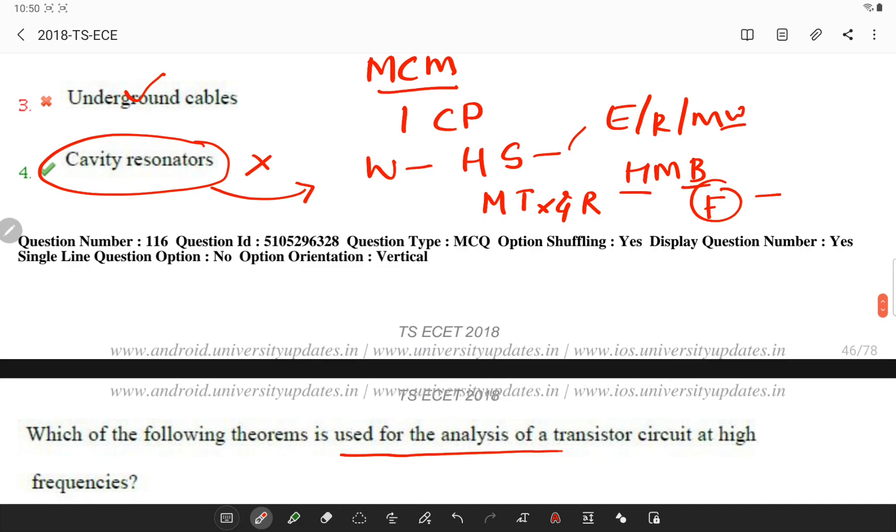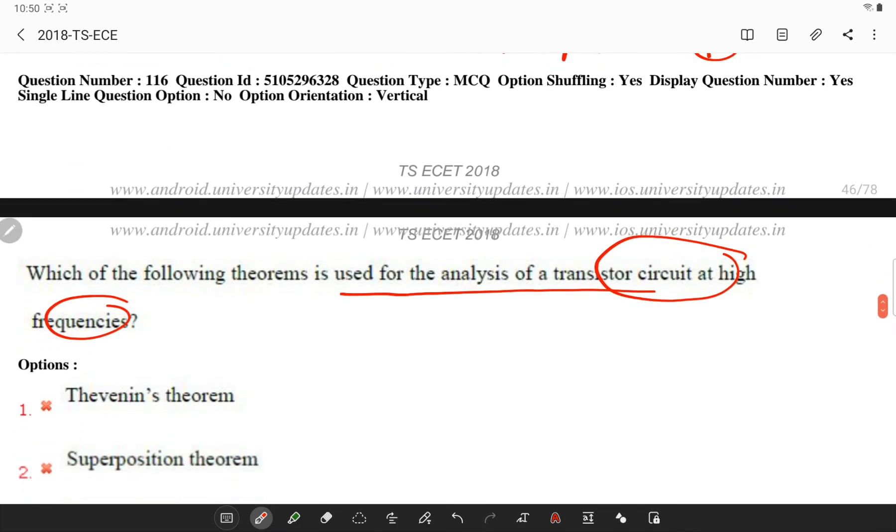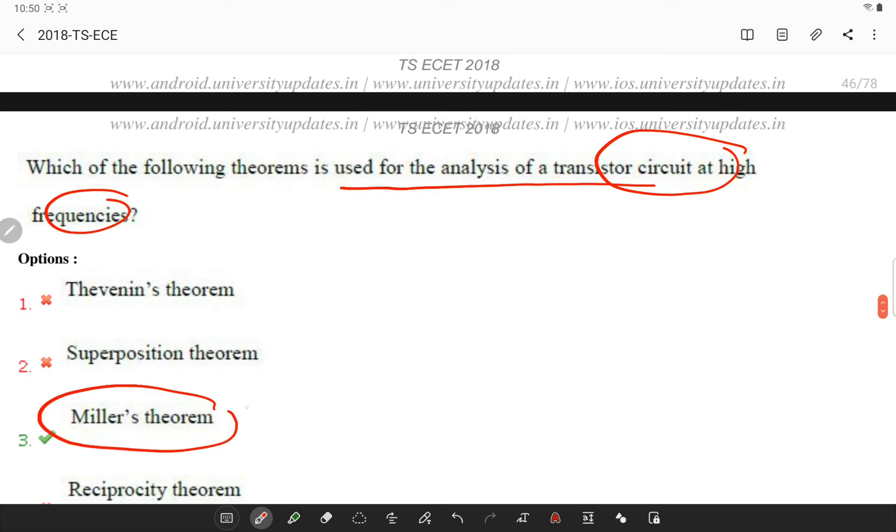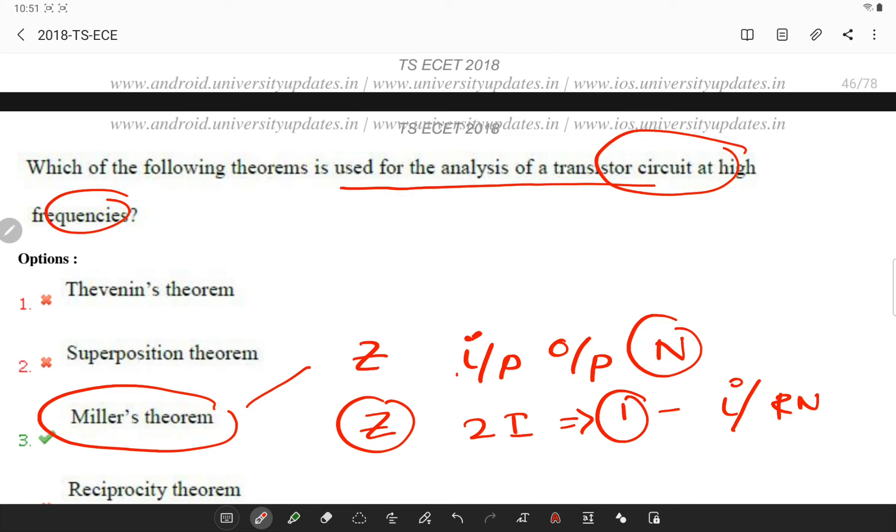Which of the following theorem is used for analysis of transistor circuit at high frequencies? Milman theorem states that if the impedance is connected between the input and output nodes in an amplifier, having a reference node N, then the impedance can be replaced by two impedances, one connected between the input and reference node, and the other connected between the output and reference node.